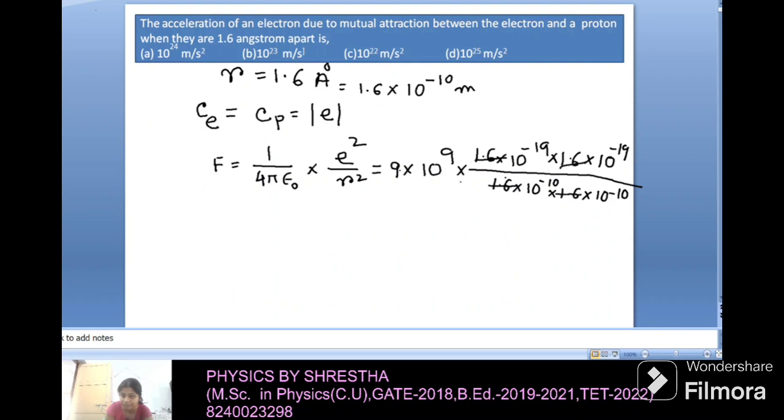After cancellation, we get value of force, 9 multiplied by 10 to the power 9 multiplied by 10 to the power minus 38 multiplied by 10 to the power 20. So after calculation we get 9 multiplied by 10 to the power minus 9 newton.